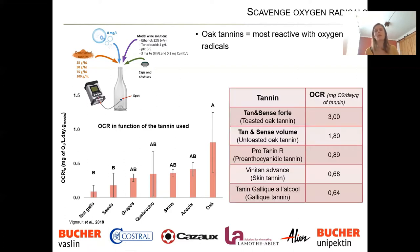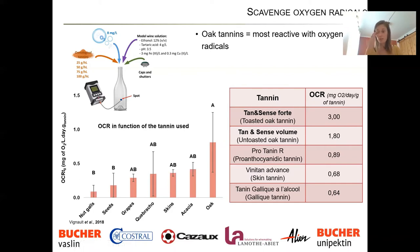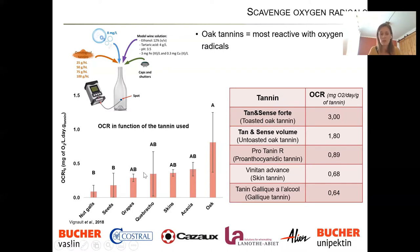We ran the same experiment with our own tannins and found the same type of result. Our oak tannins — Tanninsens and Tanninsens Volume — have the strongest capacity to consume oxygen and react with oxygen radicals. The one that performs last, while still pretty good at scavenging oxygen, is our gallic tannin, which completely correlates with Vigneault's results.